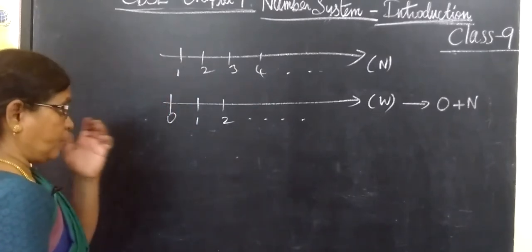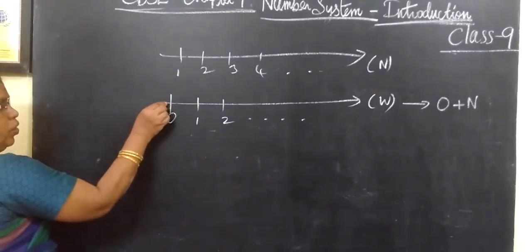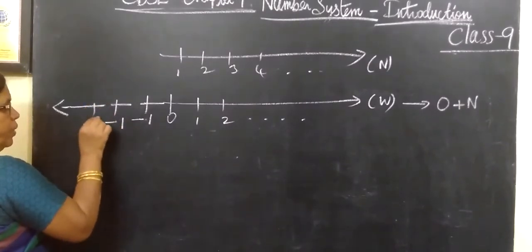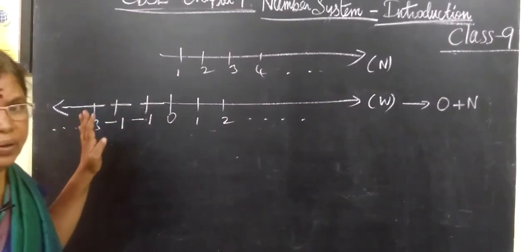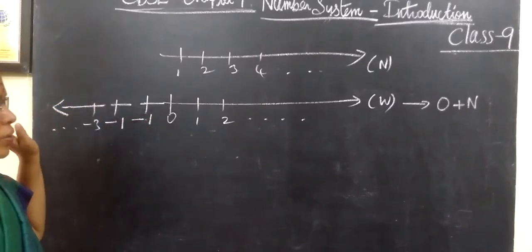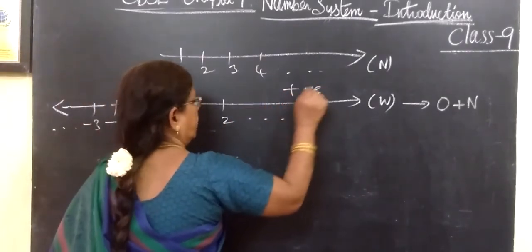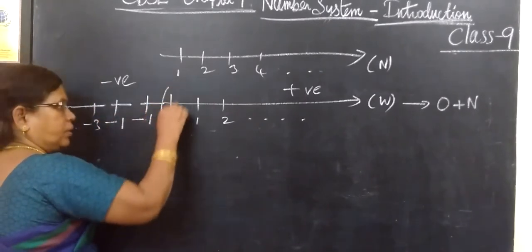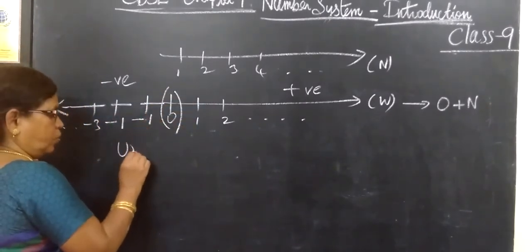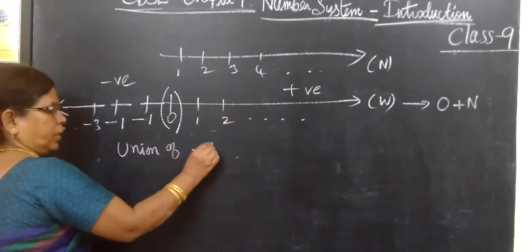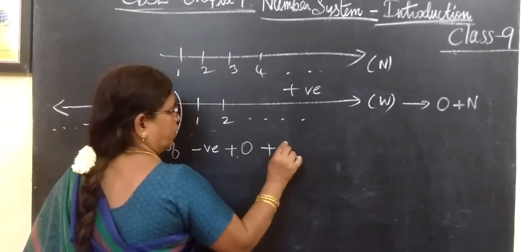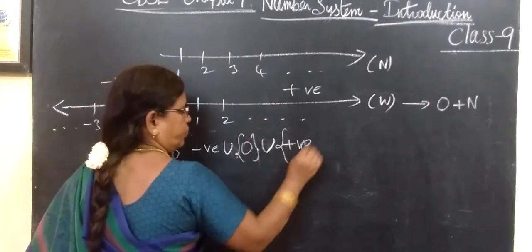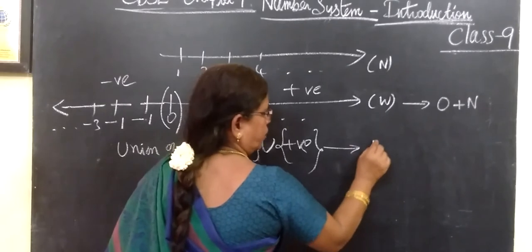If you come back in the reverse, opposite direction, you are getting minus values: minus 1, minus 2, minus 3, etc. So this is the positive direction and the opposite direction is negative. Positive numbers, negative numbers, and 0 in the middle. The union of negative numbers, 0, and positive numbers gives the set of integers.